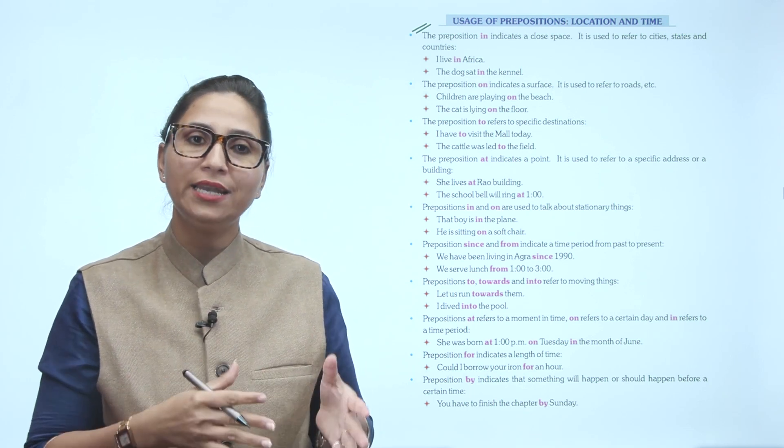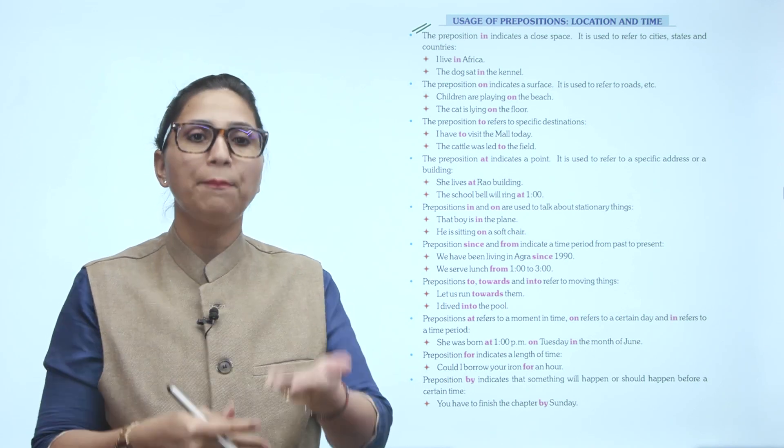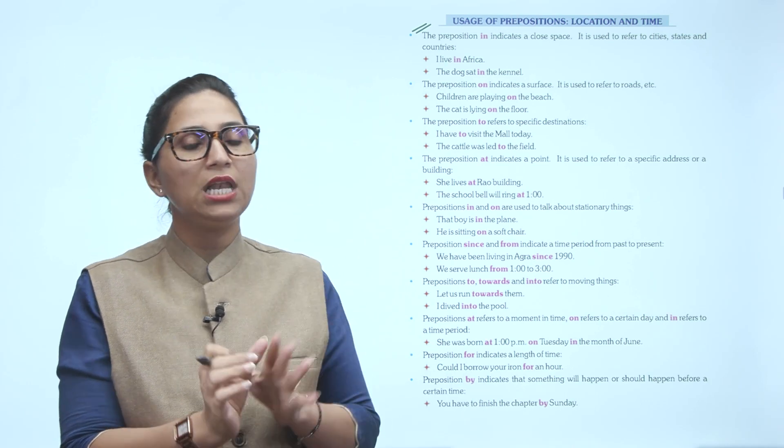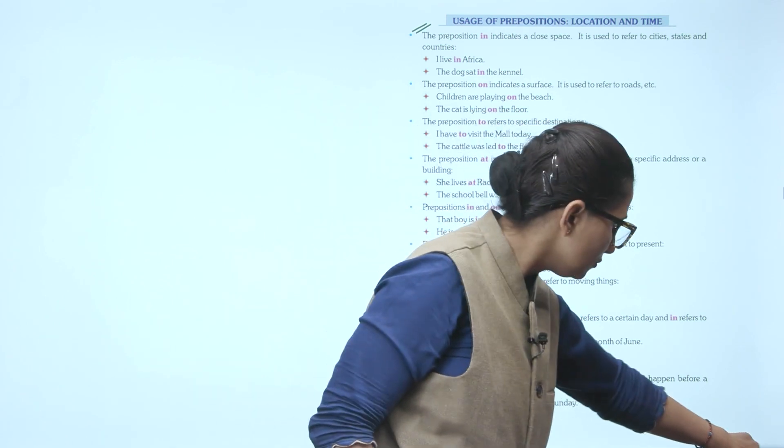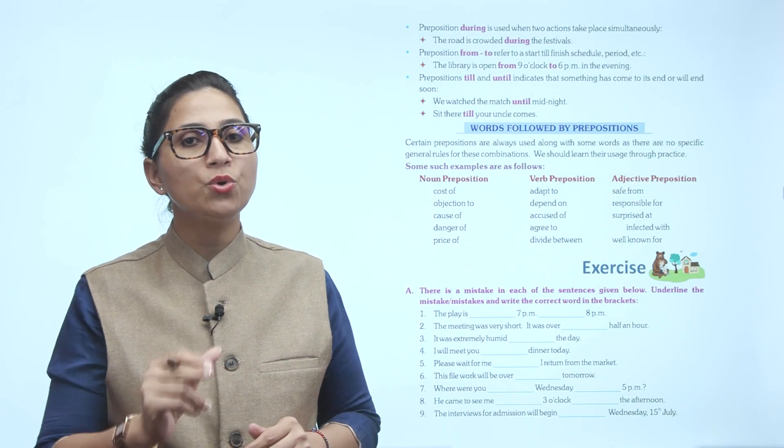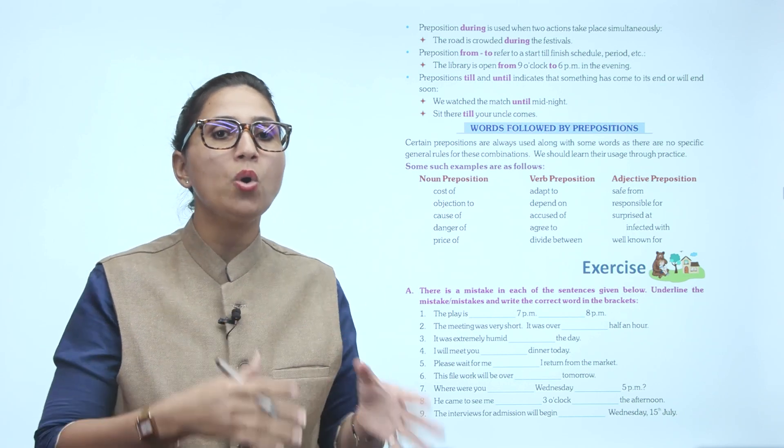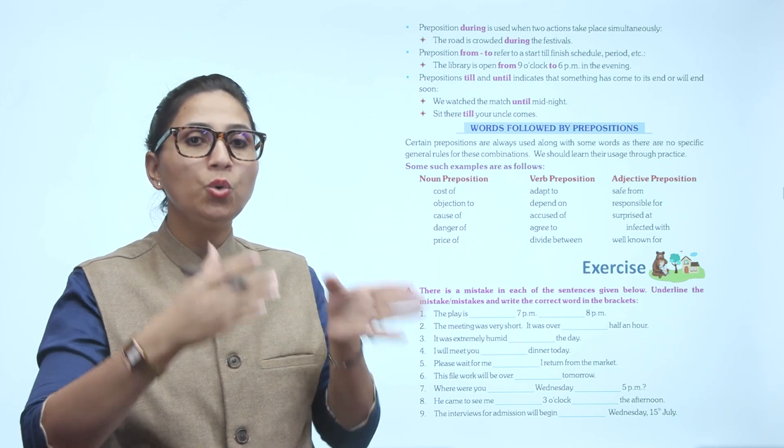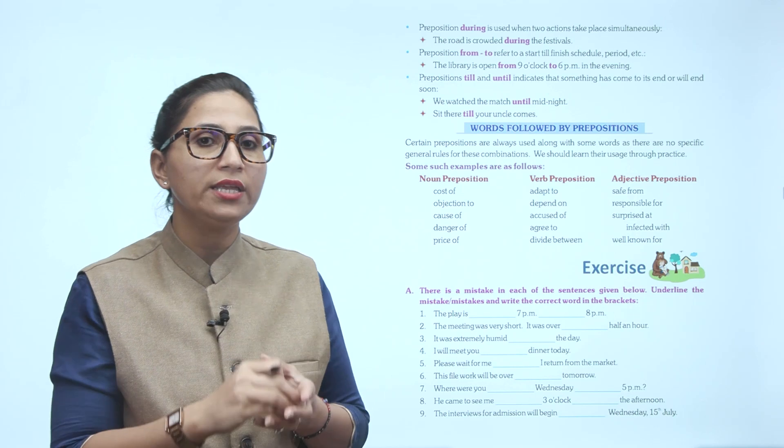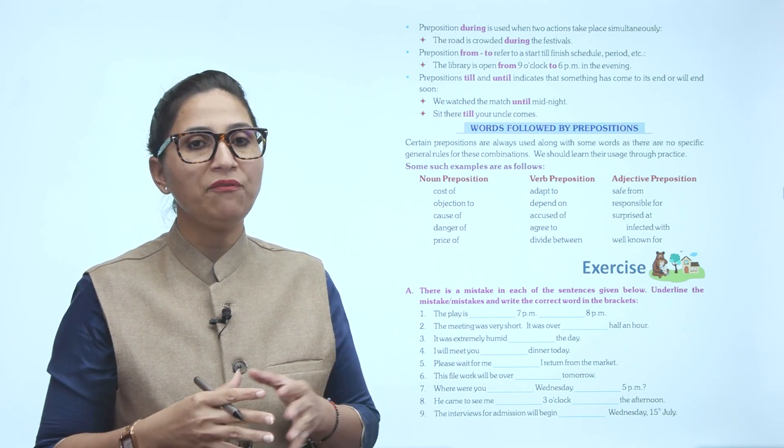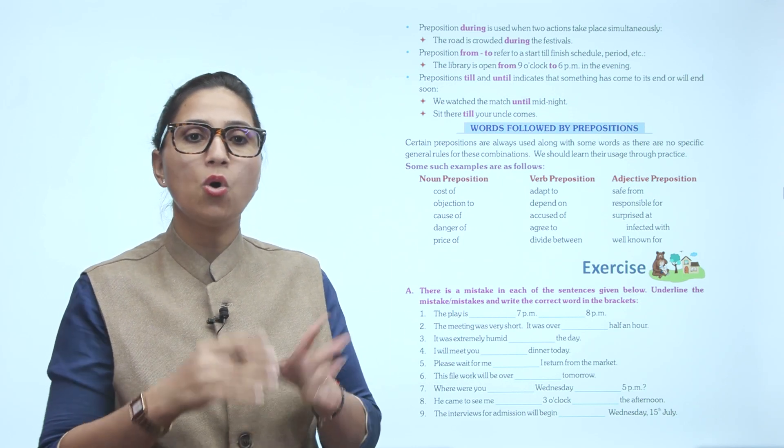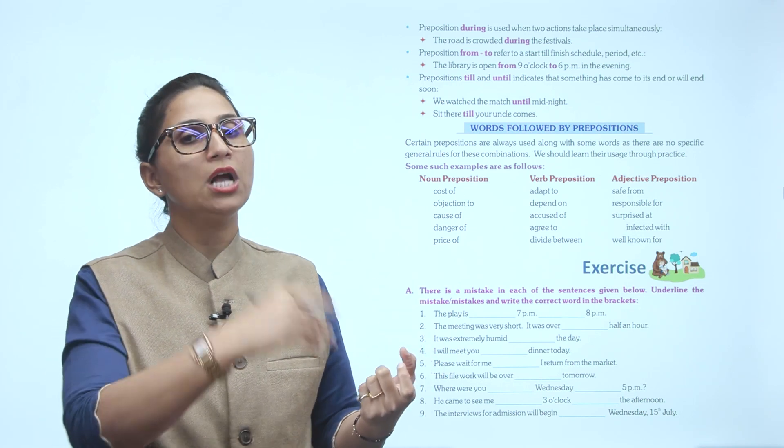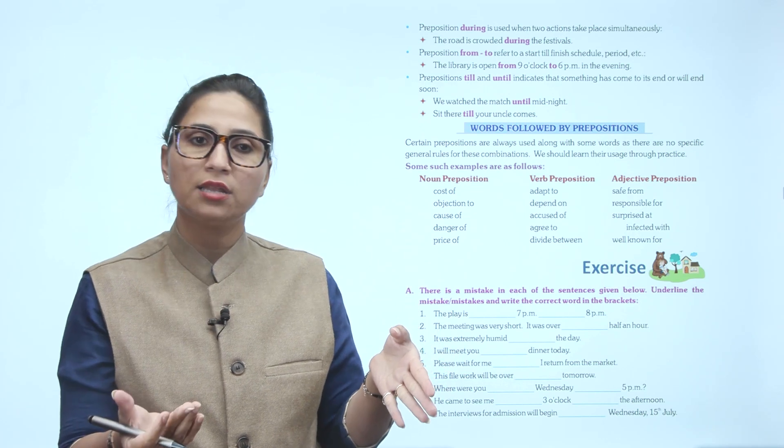The preposition DURING is used when two actions take place simultaneously. The road is crowded during the festivals. So the action takes place during that time, meaning during the festivals it is crowded. Preposition FROM TO refers to a start till finish schedule period. The library is open from nine o'clock to six PM in the evening. So FROM indicates when it starts and TO indicates when the action finishes.